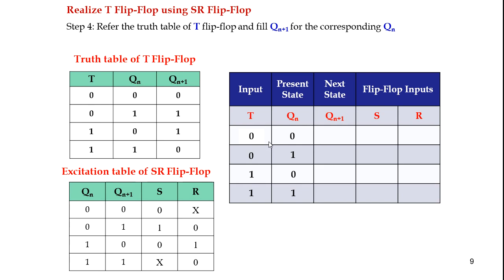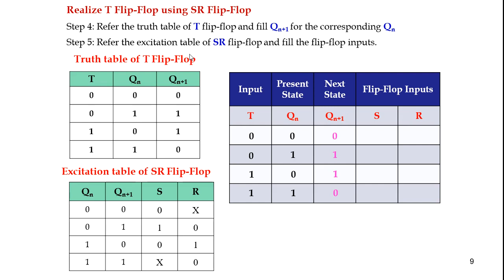Using the truth table of the T flip-flop, we fill the next state. For T = 0 and present state 0, the next state is 0. For T = 0 and present state 1, the next state is 1. For T = 1 and present state 0, the next state is 1. For T = 1 and present state 1, the next state is 0. Using the SR excitation table, we fill the SR inputs: for 0→0: S = 0, R = don't care; for 1→1: S = don't care, R = 0; for 0→1: S = 1, R = 0; for 1→0: S = 0, R = 1.